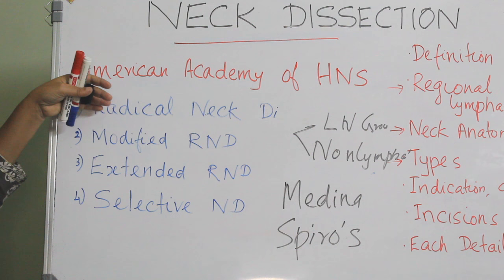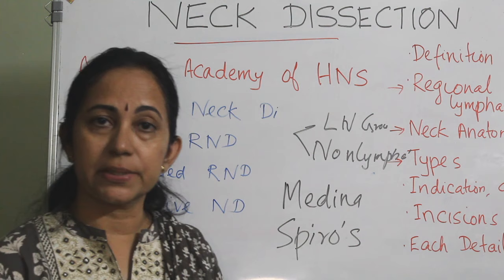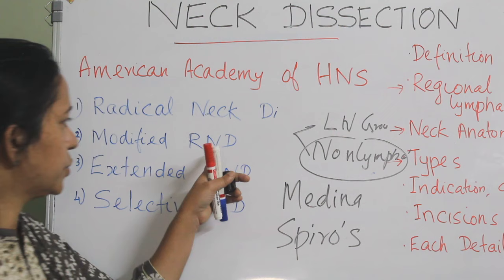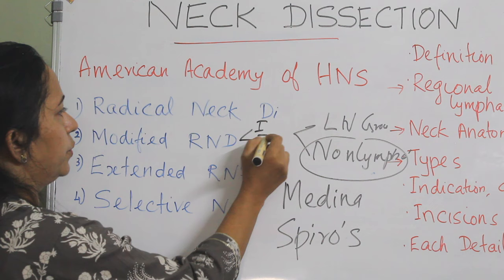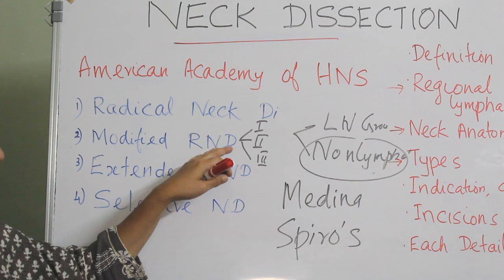In modified radical neck dissection, we preserve one or more of the non-lymphatic structures. It is again divided into type 1, type 2, and type 3, which we will discuss in detail.